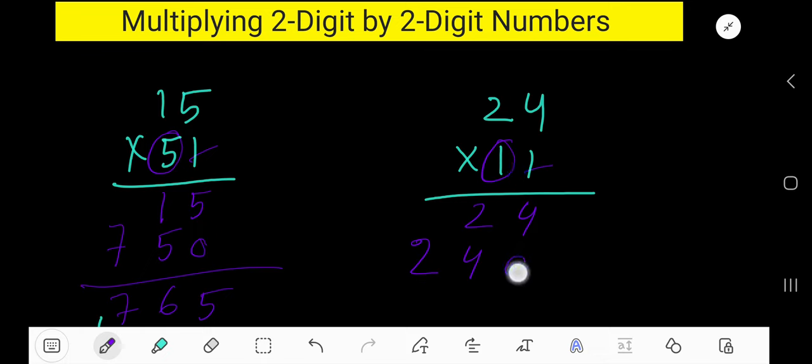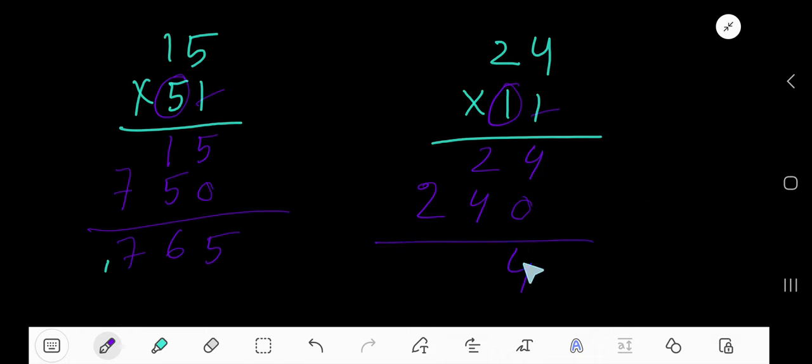The first column will have zero, which is a placeholder. So now add: 4, 4 plus 2 is 6, 2. So this is the answer: 264.